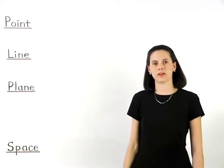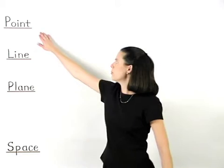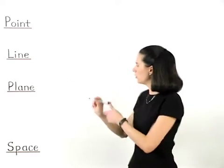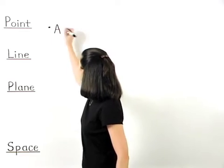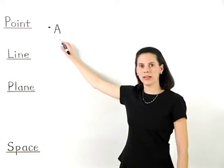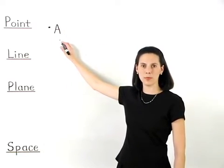The most basic figure in geometry is called a point. For example, point A. Notice that a point is usually labeled with a capital letter.